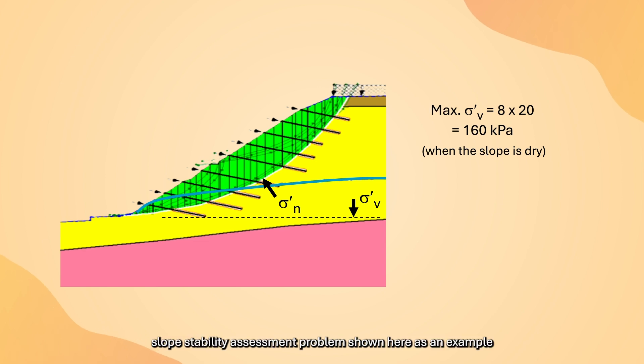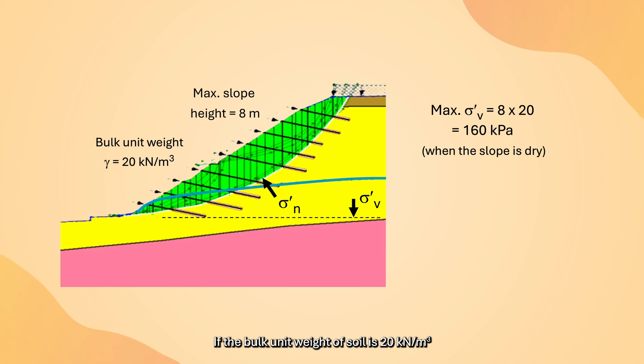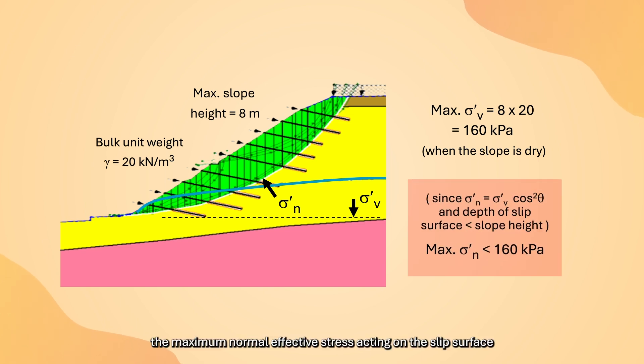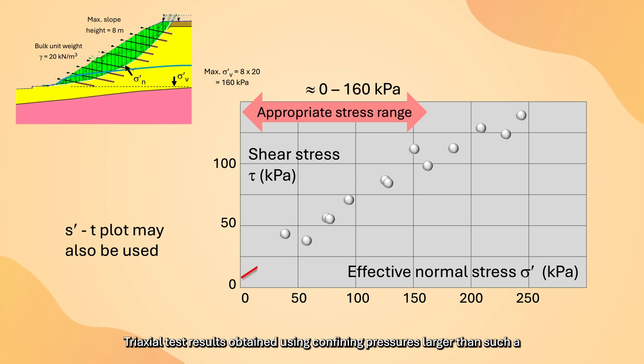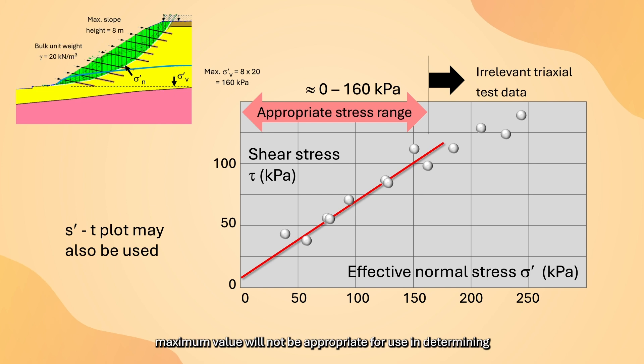Let's use the slope stability assessment problem shown here as an example. This figure shows the critical slope section for a slope. The maximum slope height is 8 meters. If the bulk unit weight of a soil is 20 kN per cubic meter, the maximum normal effective stress acting on the slip surface must not exceed 160 kPa. Triaxial test results obtained using confining pressures larger than such maximum values will not be appropriate.